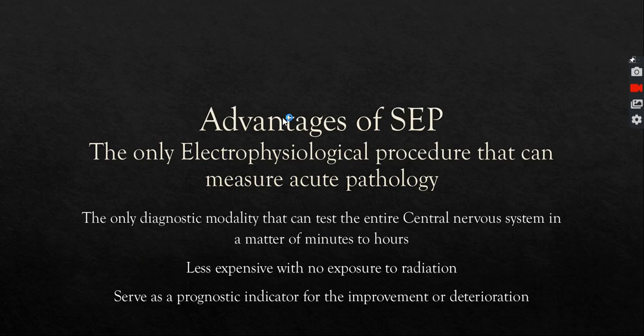What's the advantage of the SSEP? SSEPs or evoked potentials in general are the only test electrophysiologically speaking that can pick up acute pathology that happens in a matter of seconds to minutes. As you know with EMG nerve conduction studies, you have to wait for the Wallerian degeneration to occur, so the really acute pathologies will be hard to pick up. But when it comes to SSEPs, they can pick up the pathology right now. If there's a lesion that occurred, the SSEPs will pick it up immediately.